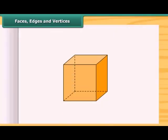Look at this cube. This is the face of a cube. This is the edge of the cube and this is the vertex of the cube. An edge is a line segment where the faces meet and the vertices are the points where the edges meet.